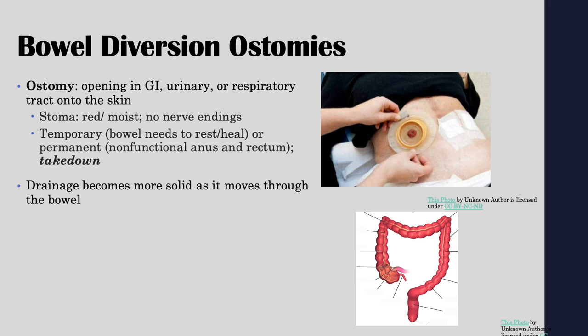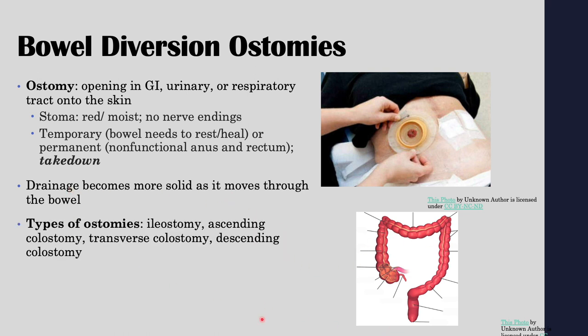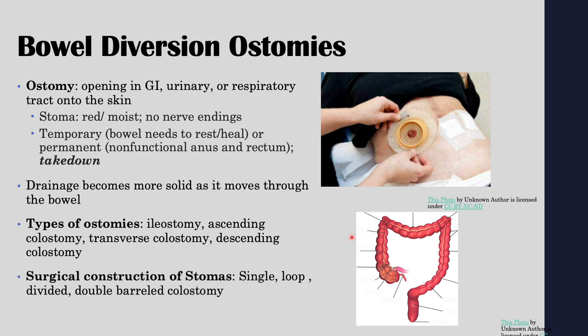As you move along the large intestine, starting in the right lower quadrant where the cecum is, chyme is least solid there. By the time you reach the sigmoid colon, right before the rectum, the contents are pretty much solid. Drainage becomes more solid as it moves through the bowel toward the rectum and anal canal. There are different types of ostomies based on where the cut was made: ileostomy, ascending colostomy, transverse colostomy, and descending colostomy — named for the location where the incision was made.